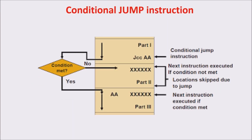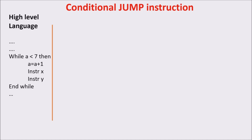Jump instructions in low-level language are a way to permanently transfer execution to another instruction located at a different memory address. Conditional jumps are used to take jumps based on the value of status flags, which we'll see later. Conditional jumps are commonly used when concepts like if statements and loops need to be implemented.